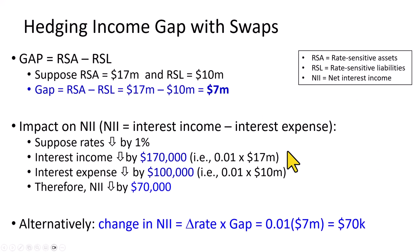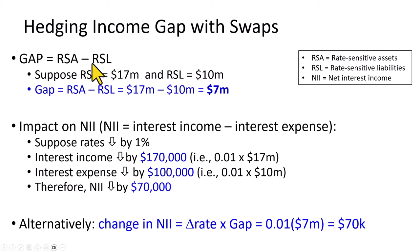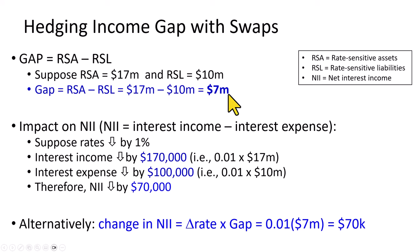In a separate presentation, the concept and calculation of income gap — widely employed in bank management — was explained. Gap is the difference between rate-sensitive assets and rate-sensitive liabilities: assets and liabilities that mature or are repriced within the same period. Suppose rate-sensitive assets amount to $17 million and liabilities $10 million. In this case, the gap position of this bank is asset-sensitive because the bank has a gap of $7 million — the amount by which assets exceed liabilities. This could be dangerous if interest rates fall.